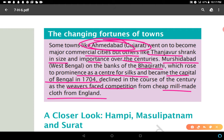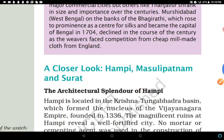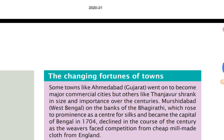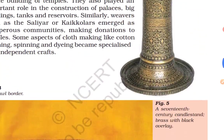Murshidabad declined in the course of the century as its weavers faced competition from cheap mill-made cloth from England. The weavers faced hard competition because industrial textiles from Manchester mills were very attractive and cheap, while handmade cloth was expensive and less competitive. In the next video we will discuss Hampi, Masulipatnam, and Surat. Please revise the chapter by reading the textbook.